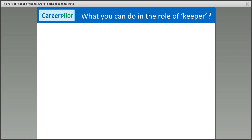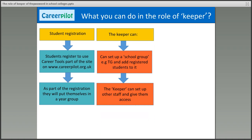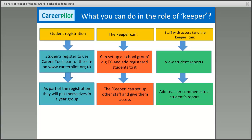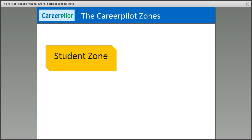So what can you do in the role of a keeper? Students are registered on the system through the student area — they go to careerpilot.org.uk. As part of registration they will put themselves in a year group. You as the keeper will be looking at the back end of the system called the reporting zone, where you can set up additional groups. You can also issue other staff with passwords so they can access student information, view student reports, and add comments to a student report. The keeper is also responsible for looking after the data, so you need to be aware of data protection requirements and comply with the DSA signed by your school or college.